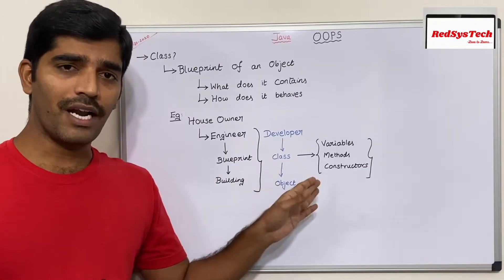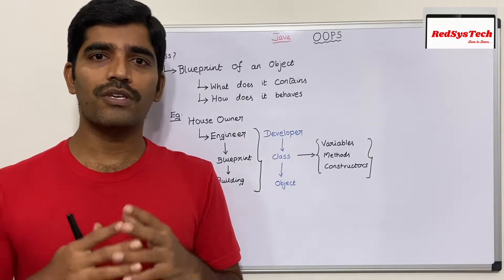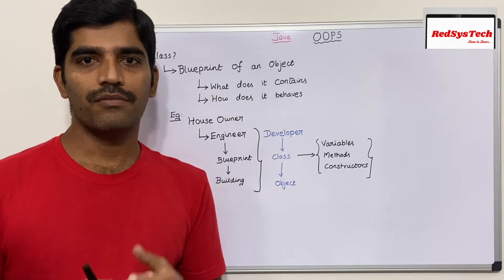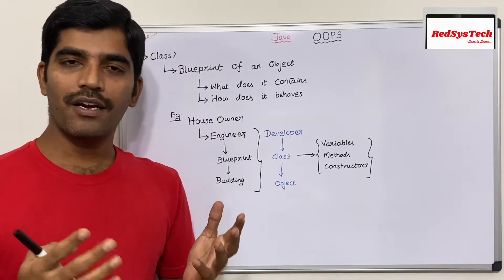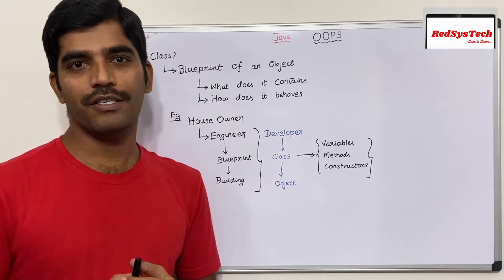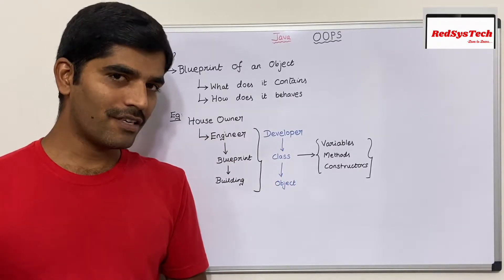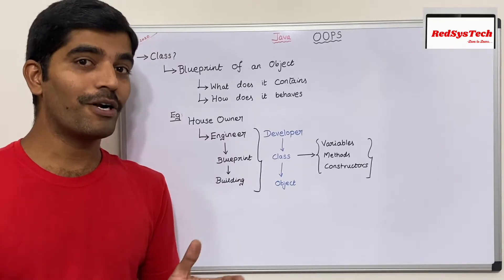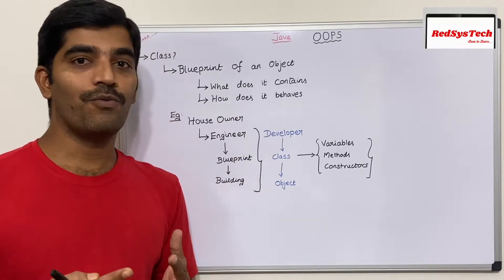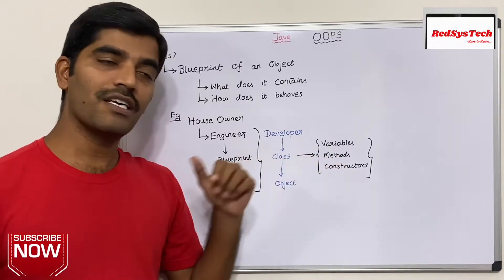Getting deeper into class — we can have any number of classes to construct an actual application. A typical real-time application will have almost 100 to 200 classes, and everything we deal with in Java involves classes. That is why it's very important to understand what a class is, how it looks, and what it actually means.